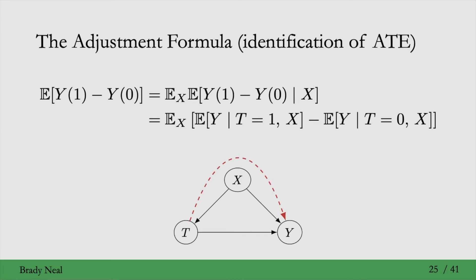To get some graphical intuition for this, consider that this is our causal graph, where X is a confounder of the effect of the treatment on the outcome. Then what we're doing is we're conditioning on X here and marginalizing over it in order to adjust for X.